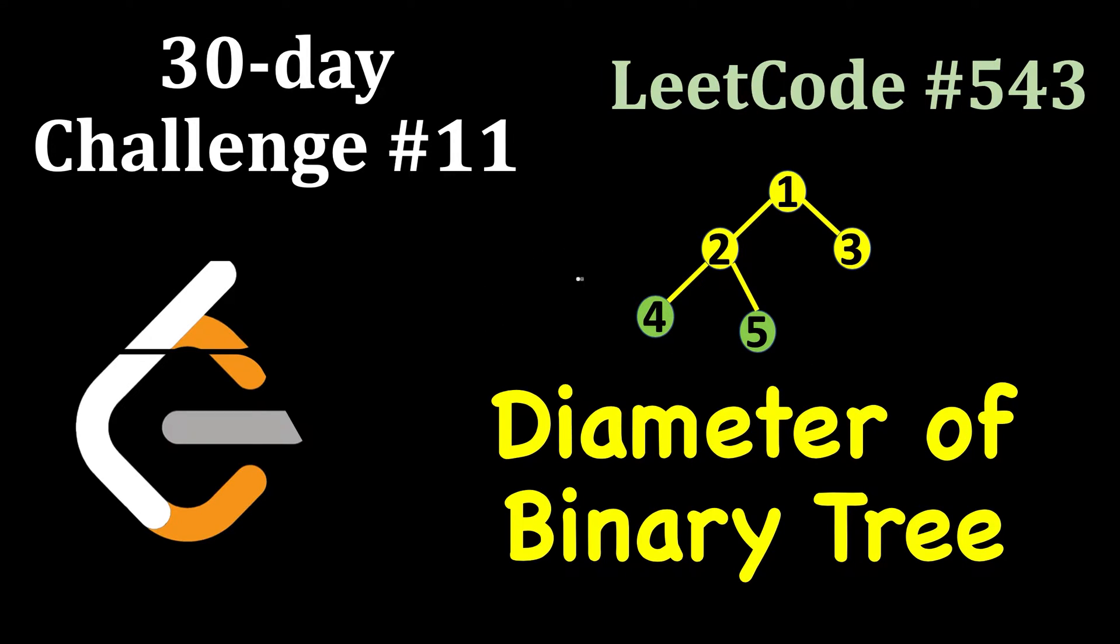First let's understand what is meant by diameter. Diameter is the maximum distance between any two pair of nodes in the tree. For example, if you look at this tree, the distance between 4 and 5 is this: 1 and 2. You have to count the number of edges.